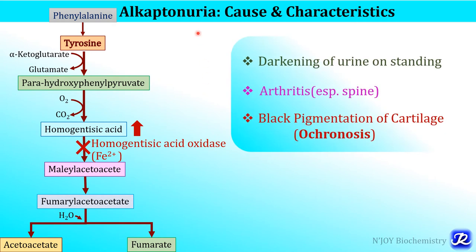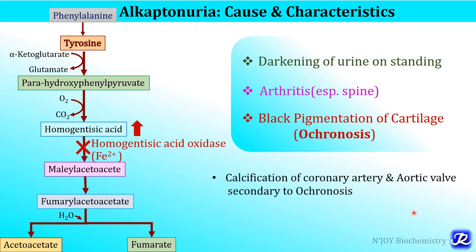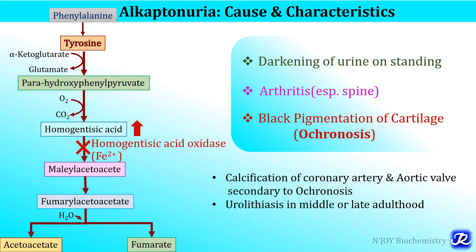The major characteristic features of alkaptonuria are: darkening of urine on standing when exposed to air, arthritis (especially of the spine), and black pigmentation of cartilages called ochronosis. In addition, there can be calcification of the coronary artery and aortic wall secondary to ochronosis, and urolithiasis in middle or late adulthood is also common.